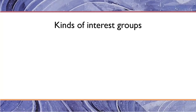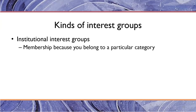In political science, we talk about different kinds of interest groups. There are two broad categories. Institutional interest groups are groups you're a member of because of a particular category — for example, if you're a college student, you're part of the institutional interest group that defines college students. Similarly, if you're a doctor, you might be considered institutionally a member of the medical interest group. But oftentimes people don't feel like they're a member because they haven't taken an affirmative step to join — they simply exist as a member due to their institutional standing.